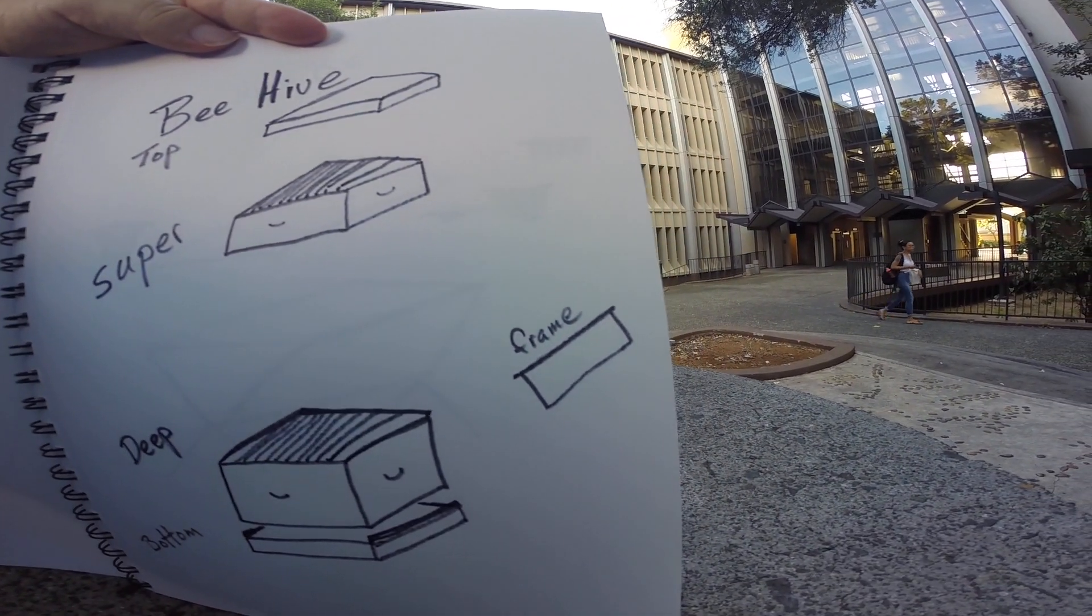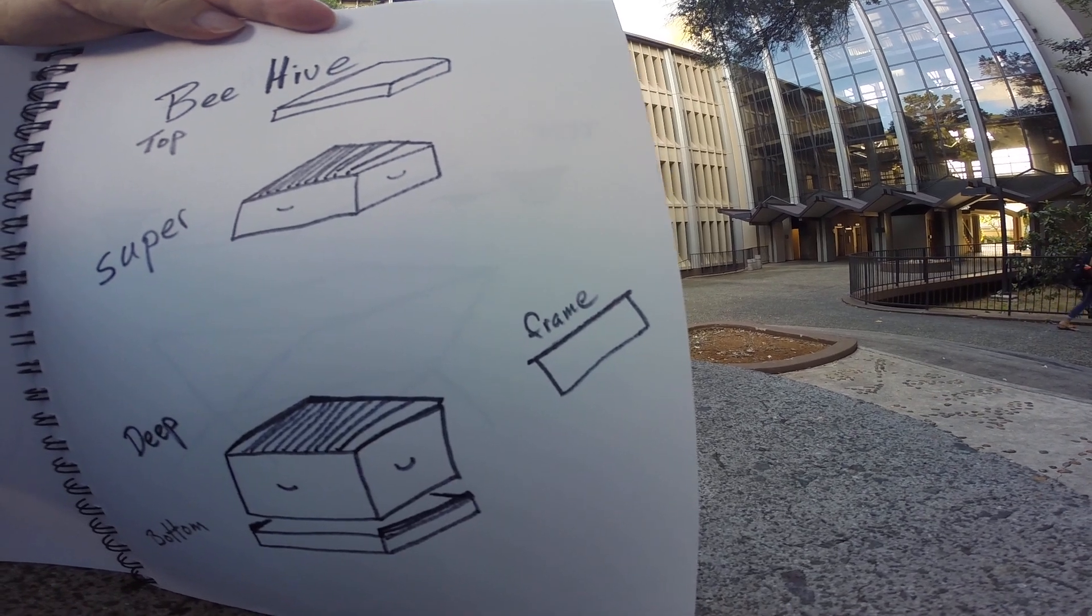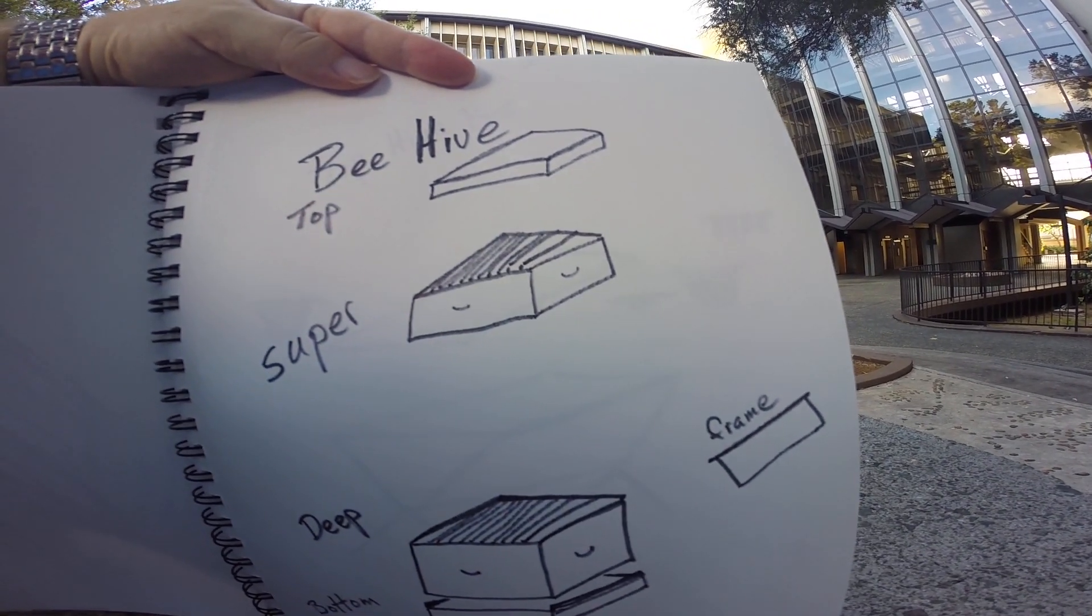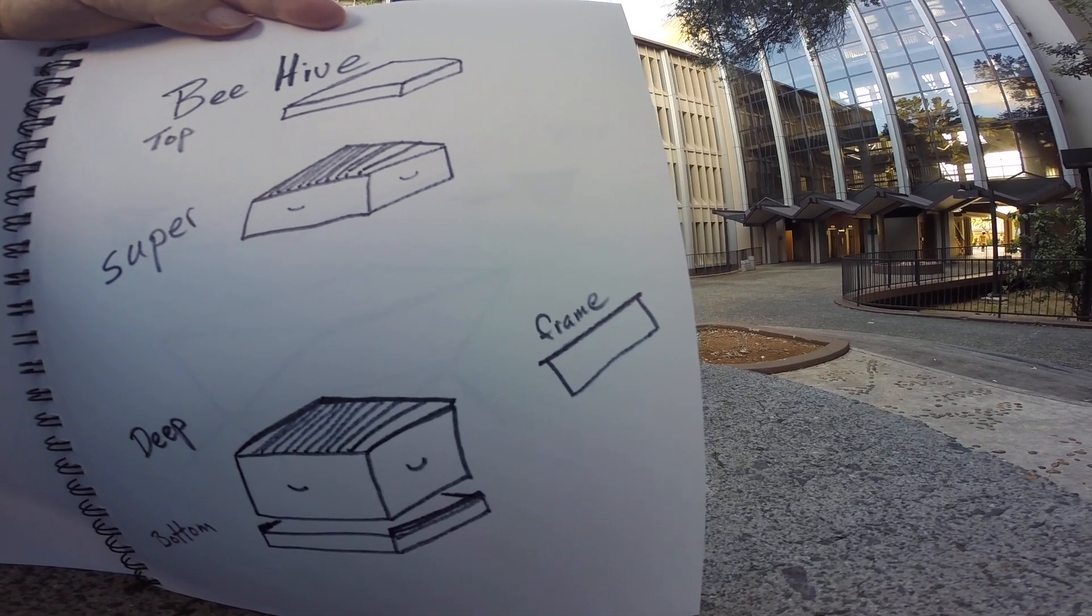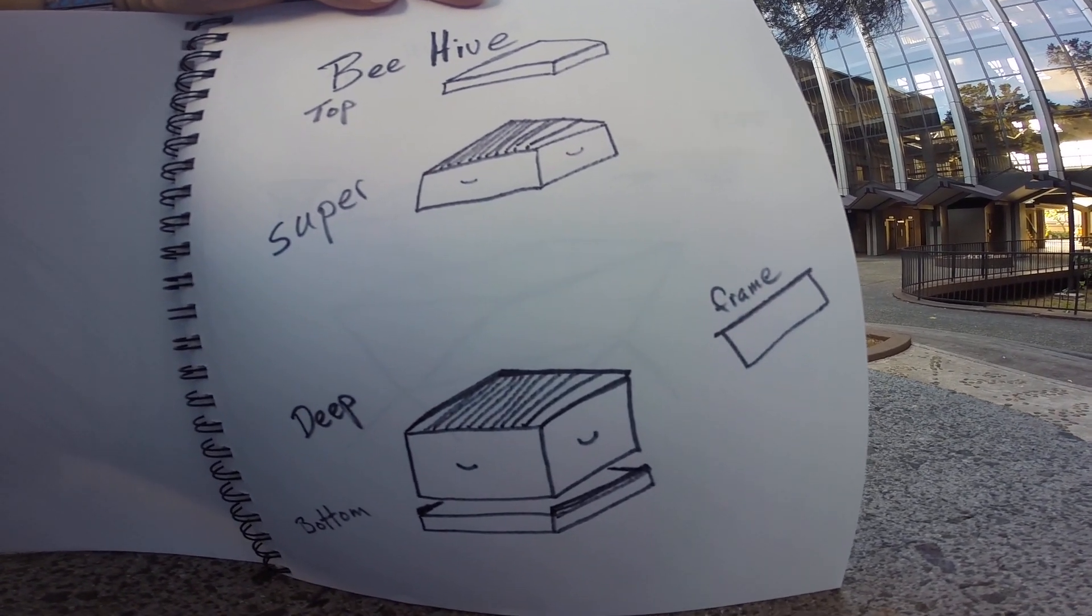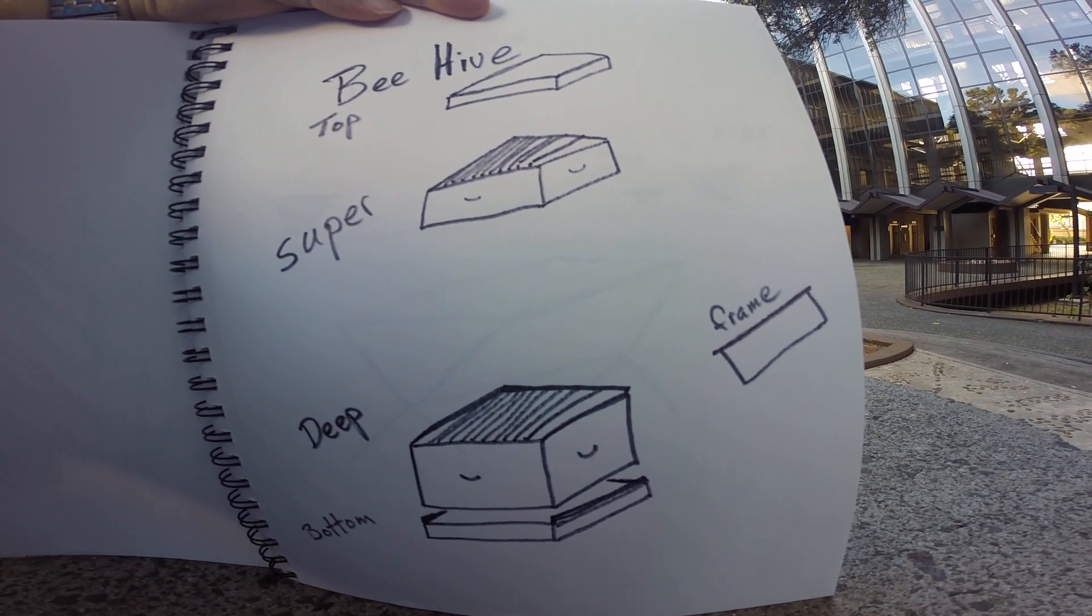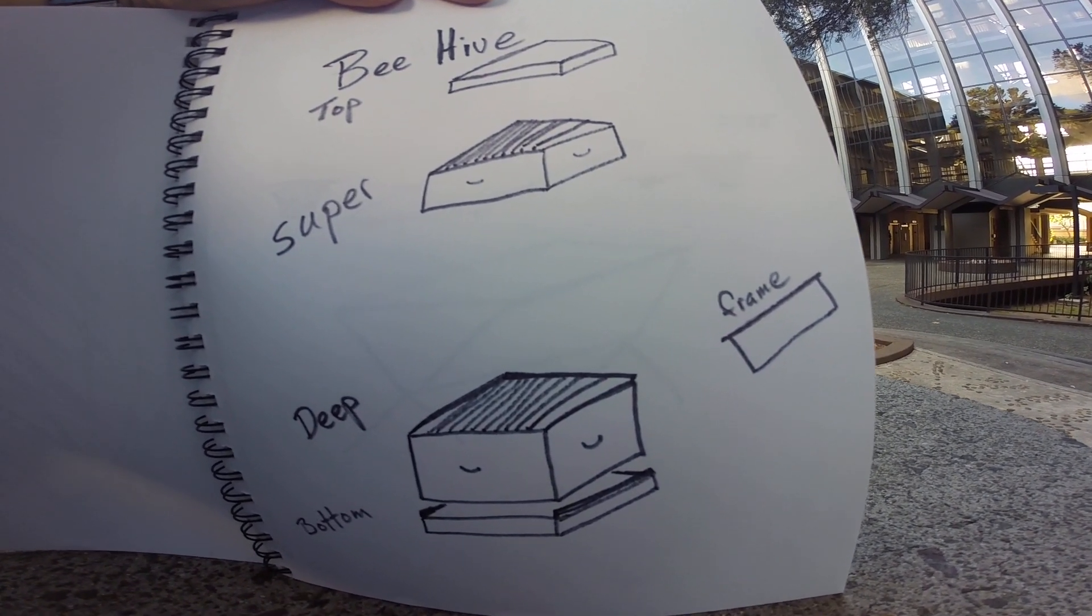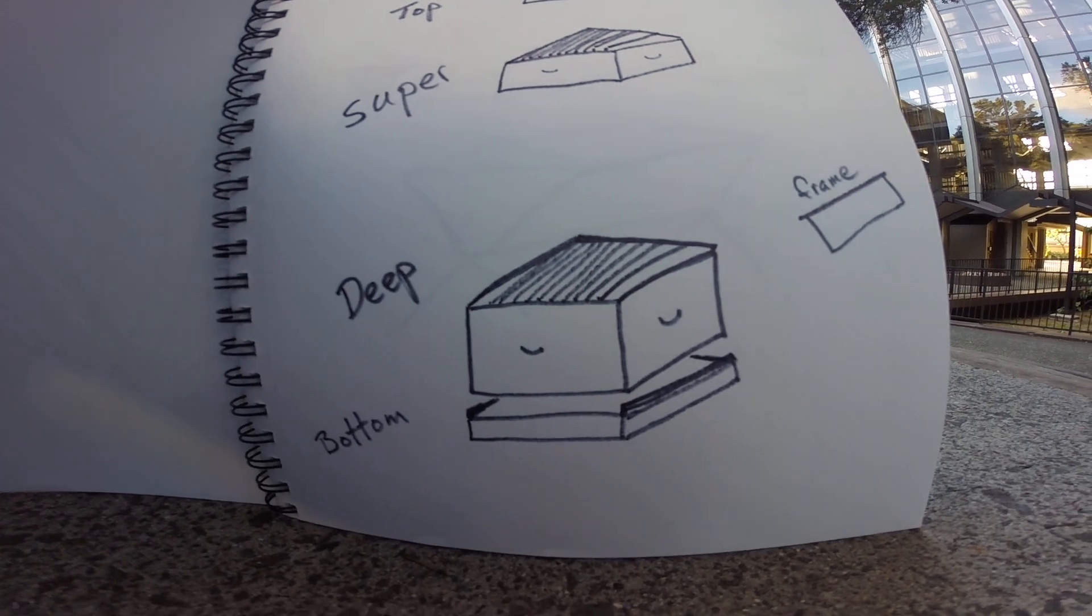All frames are standardized with a single sheet of wax inside to help bees build out or draw out beeswax comb, which can be used for brood in the deeps or honey in the supers.